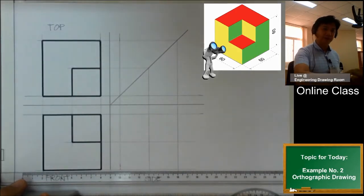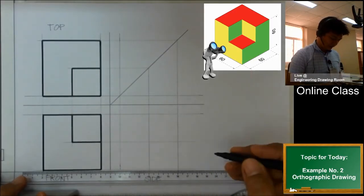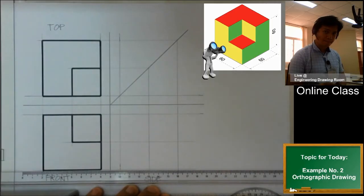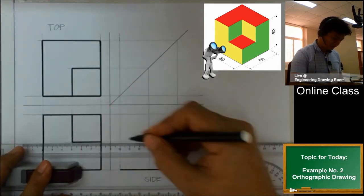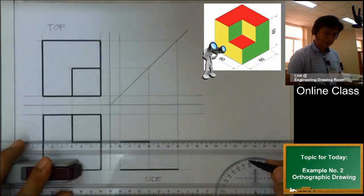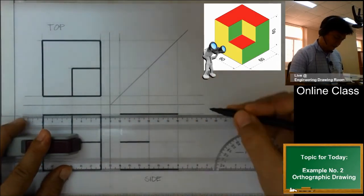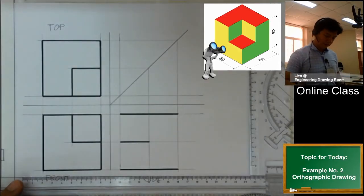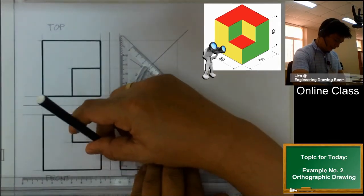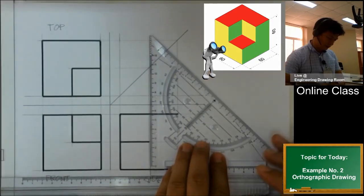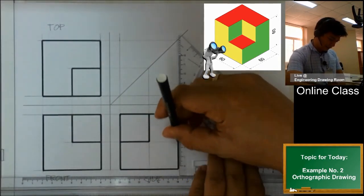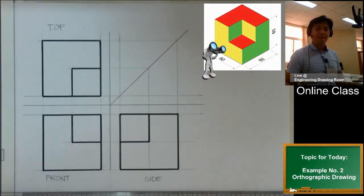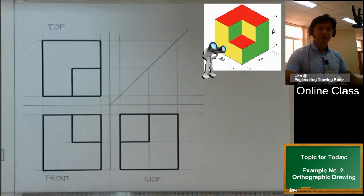We can now make our side view. Let's use our marker pen to make the lines more visible. We have one horizontal line, another one here, and there. Of course, our vertical lines: one on this side, one here on this side, another one on this side, and lastly from this point up to this corner. And there you have it — our three main views: the top view, the front view, and the side view.